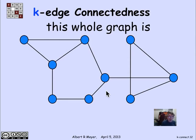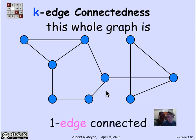Here's an example of a graph that globally, this was the graph that we saw before, that has some vertices that are one edge connected, others that are two, others that are three, but the graph as a whole is only one edge connected because there's this one edge that can be removed that splits it in two.